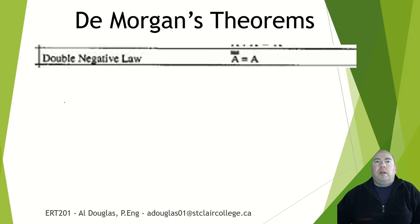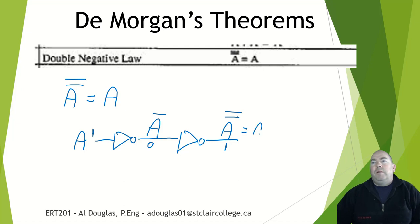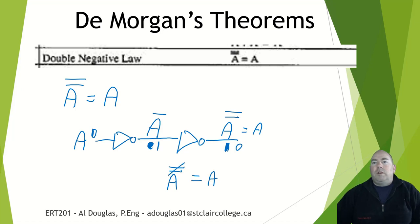The double negative law: if you have two bars over something, they cancel each other out. If you have A, go through a NOT, you get A-bar. Go through another NOT, you get a double bar. If we start with a 1, the first NOT makes it a 0, the second NOT makes it a 1 again — we always come back to where we started. With a double negative, you can basically just cancel that double bar out. That is the double negative law.